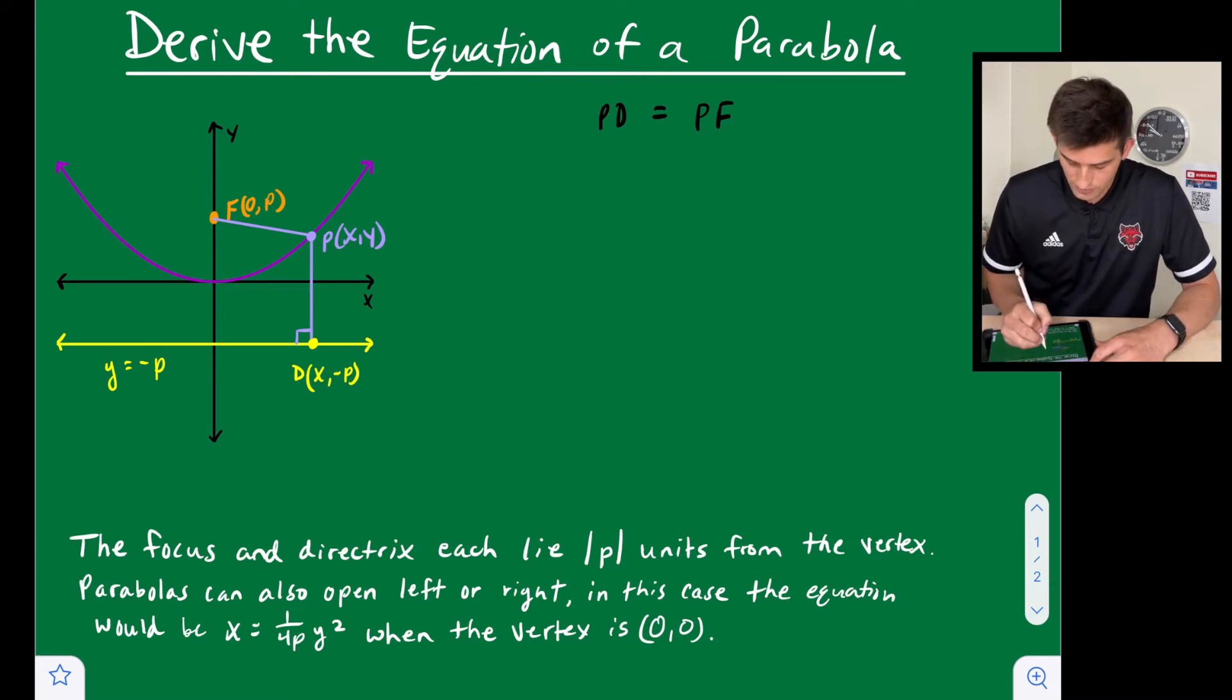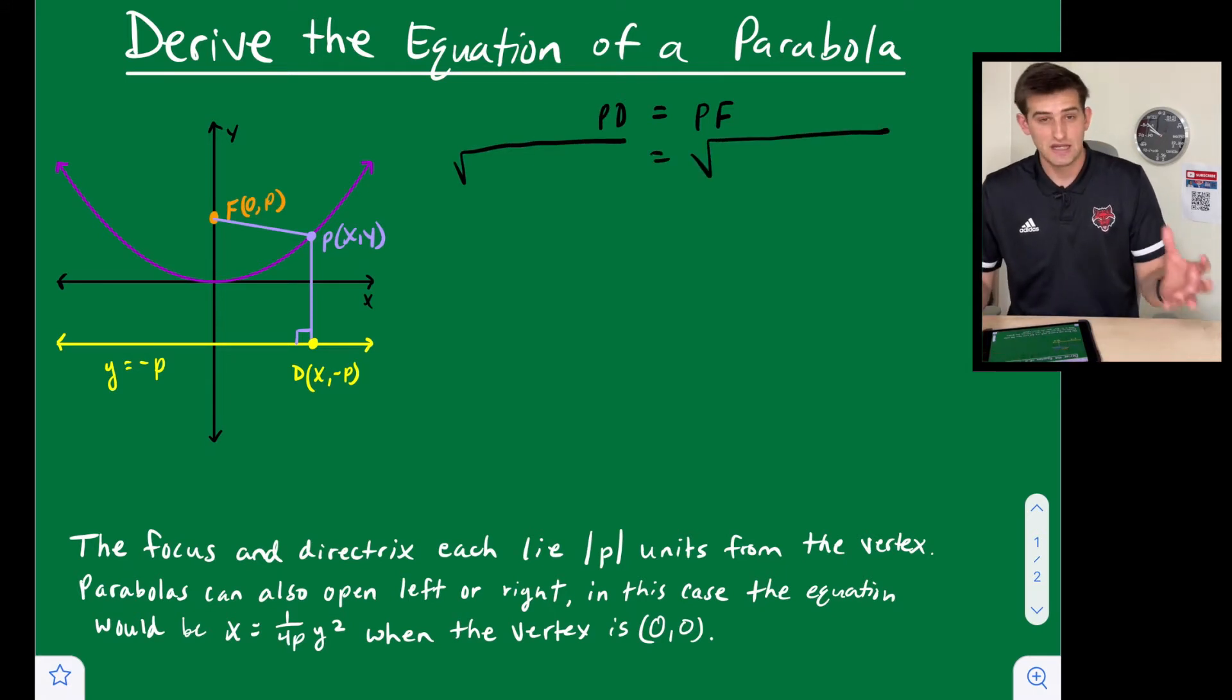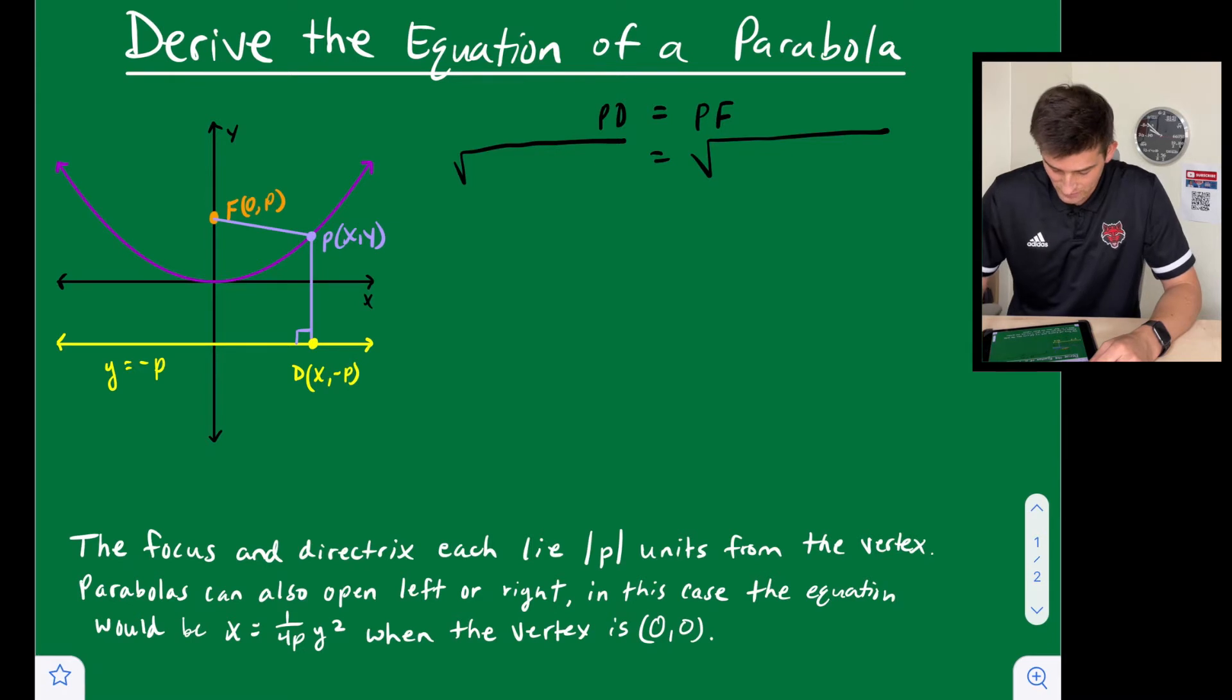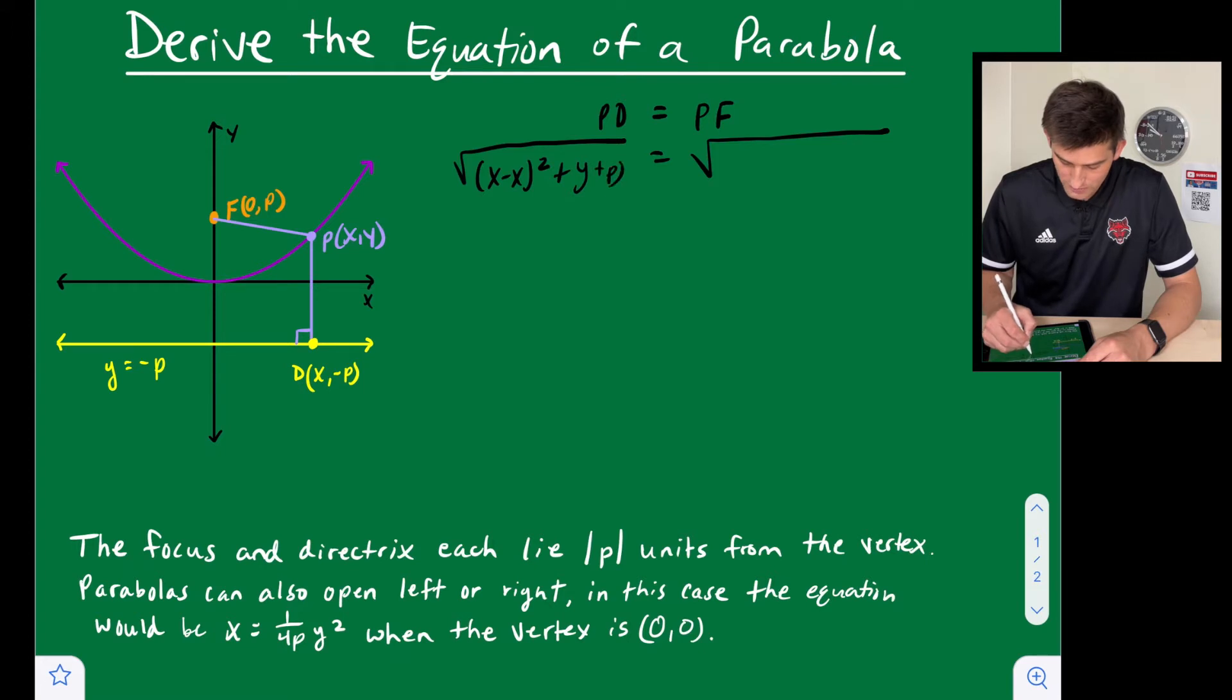So what we can do now is use the distance formula. We know the distance formula is √[(x₂ - x₁)² + (y₂ - y₁)²]. So we'll start off with PD and we're going to say √[(x - x)² + (y - (-p))²], so √[(x - x)² + (y + p)²]. Now for PF we're going to say √[(x - 0)² + (y - p)²].